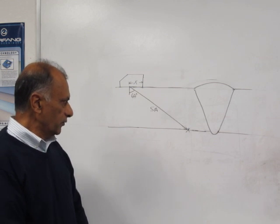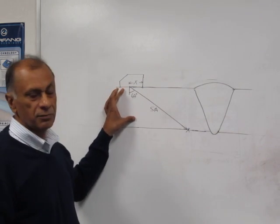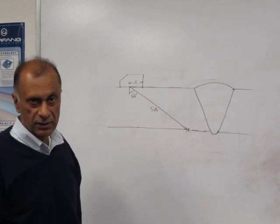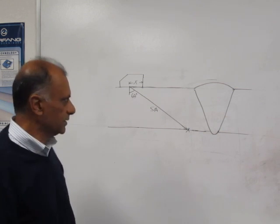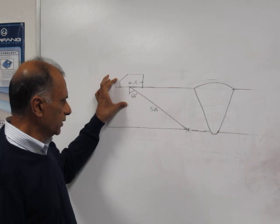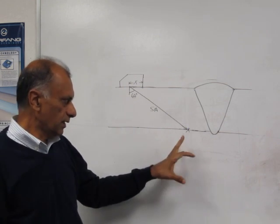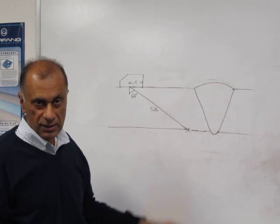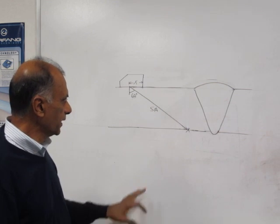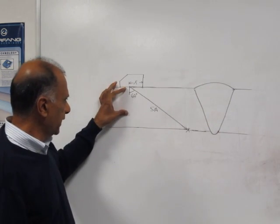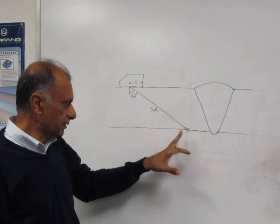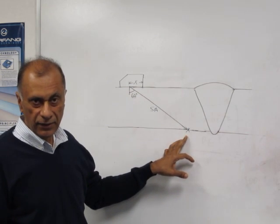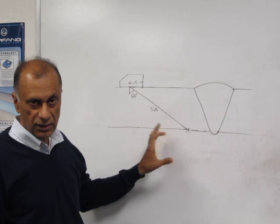The inspection uses an angle beam probe, typically 45, 60, or 70 degrees. The probe is scanned towards the weld to look for defects such as cracks, lack of fusion, slag, and porosity. If there is a reflector in that area, it will produce an ultrasonic signal.